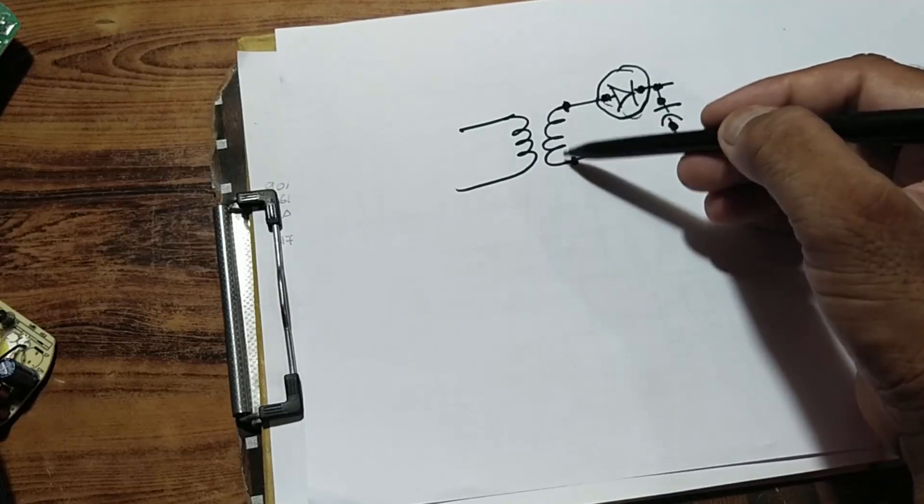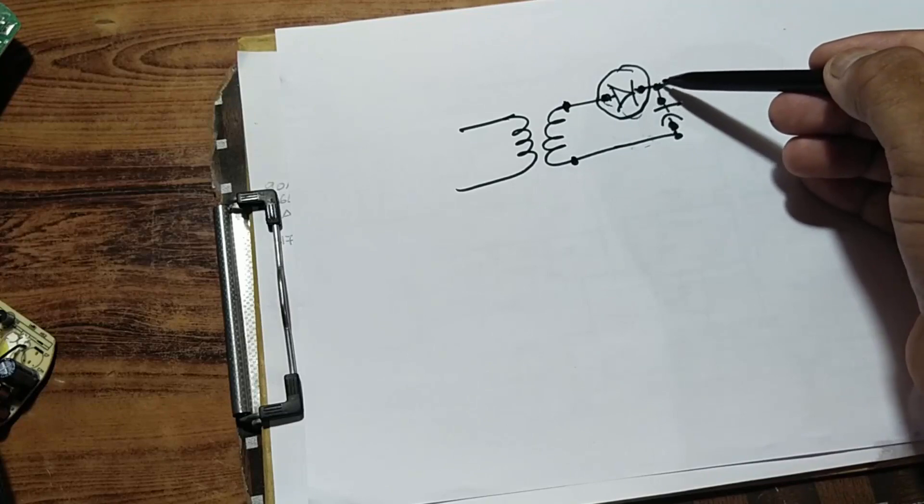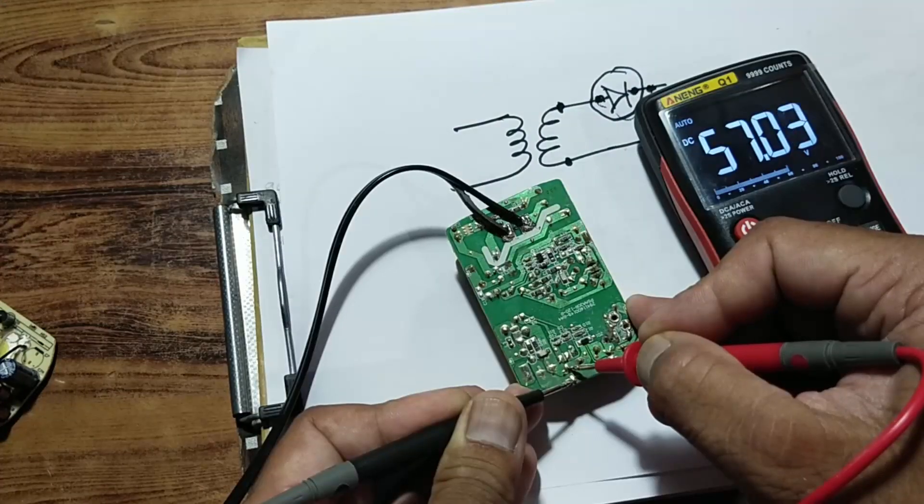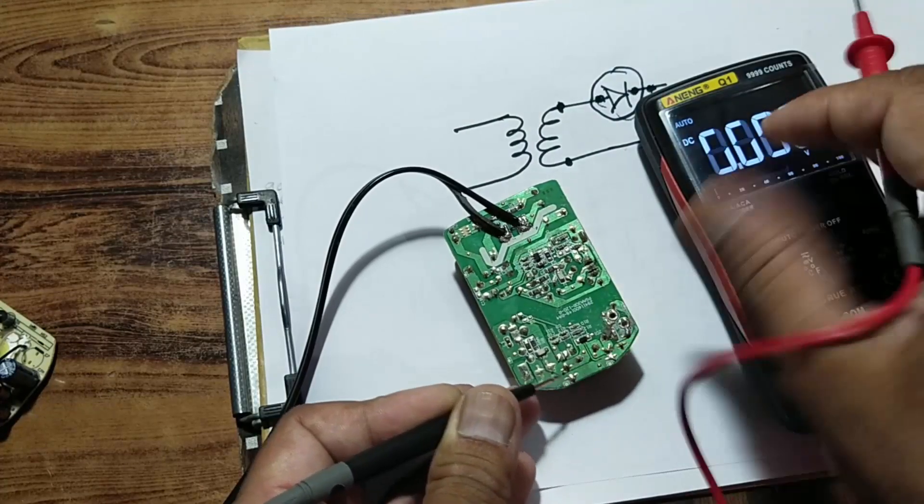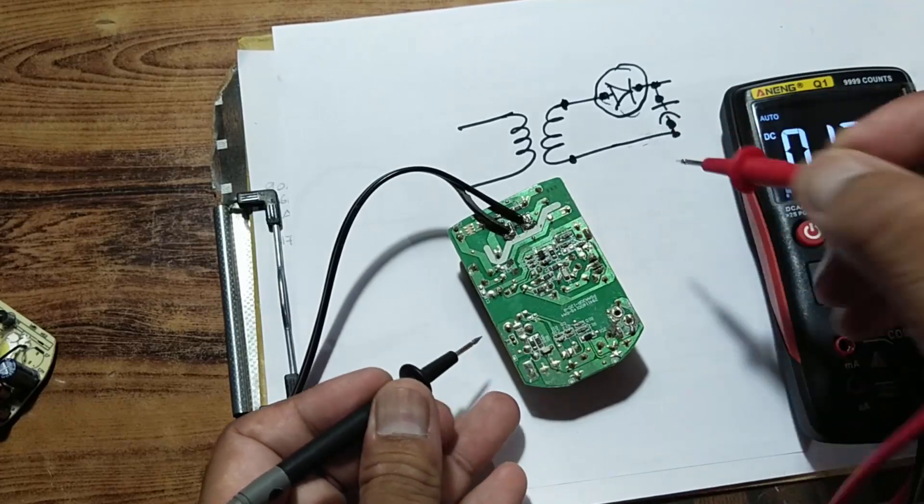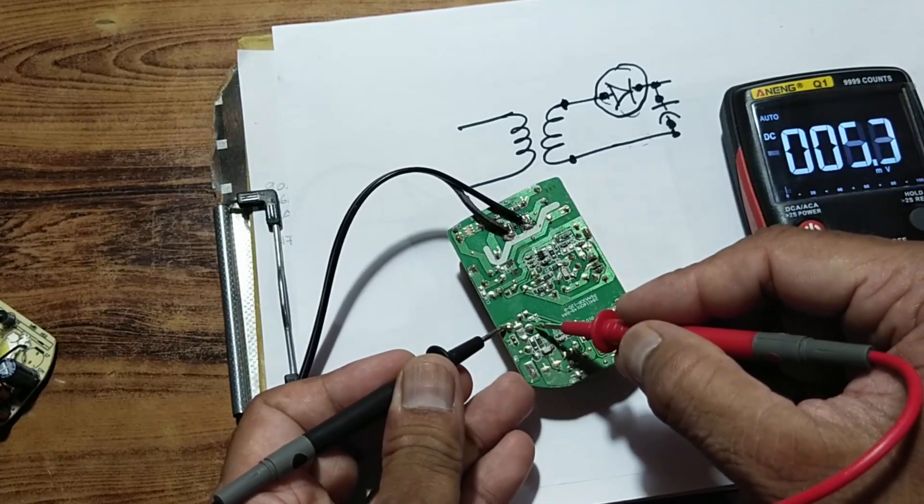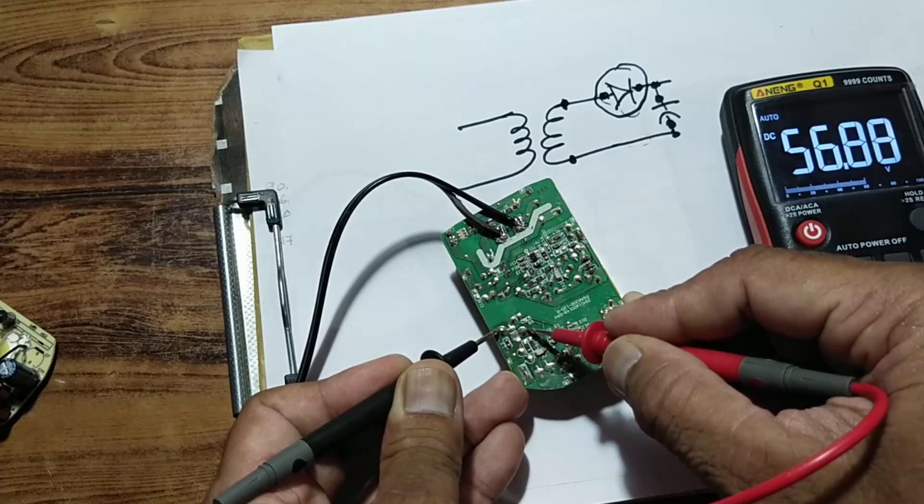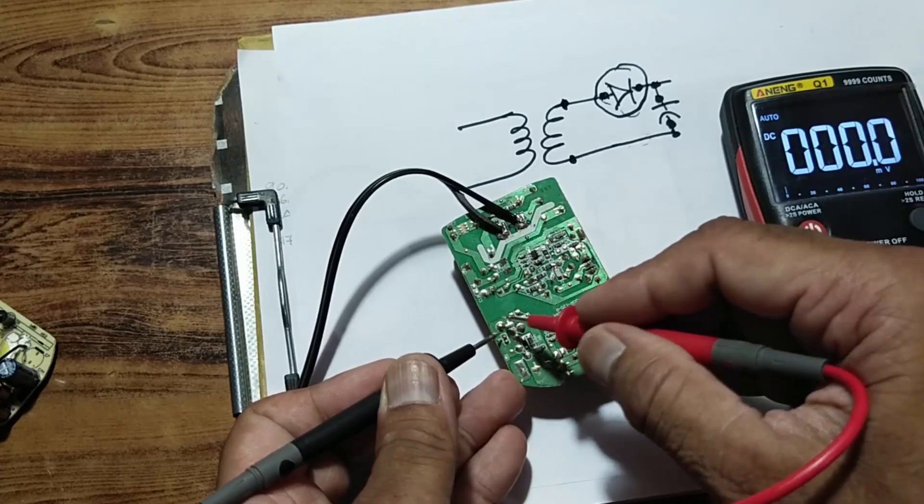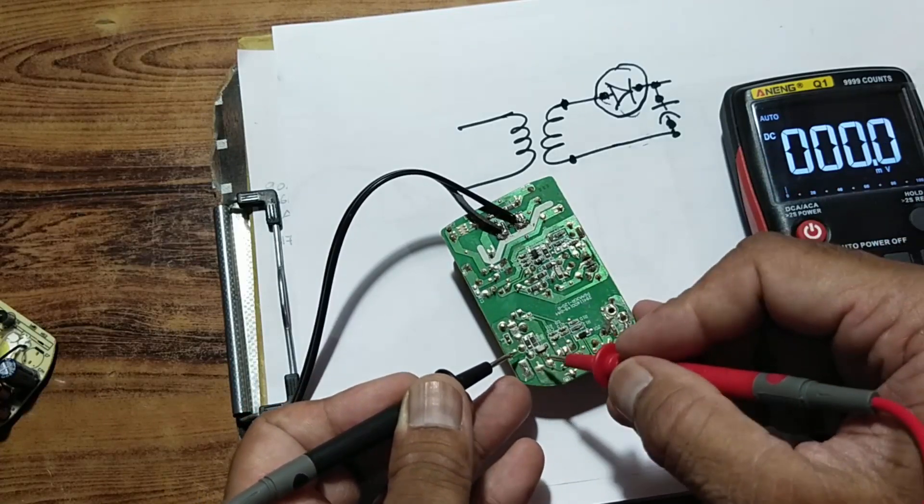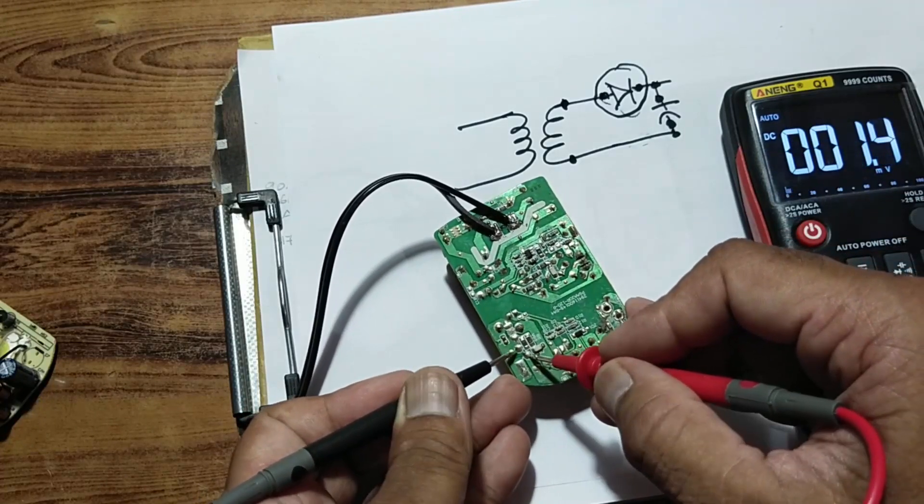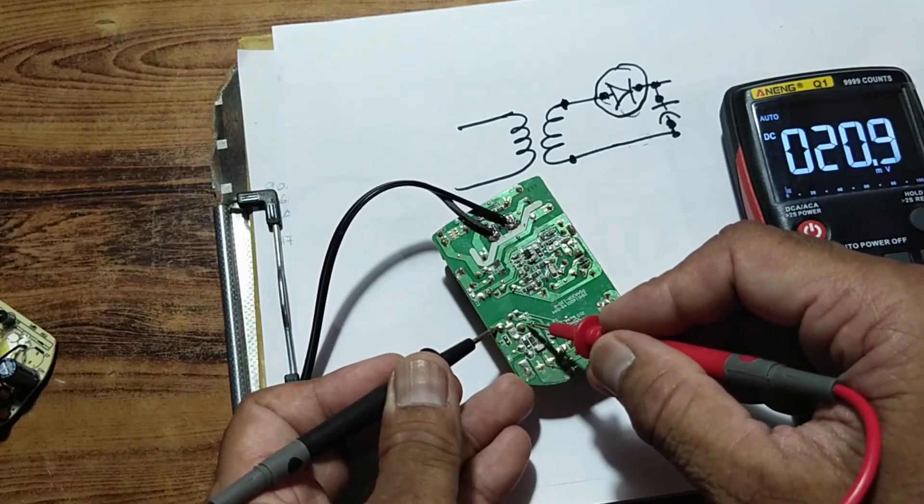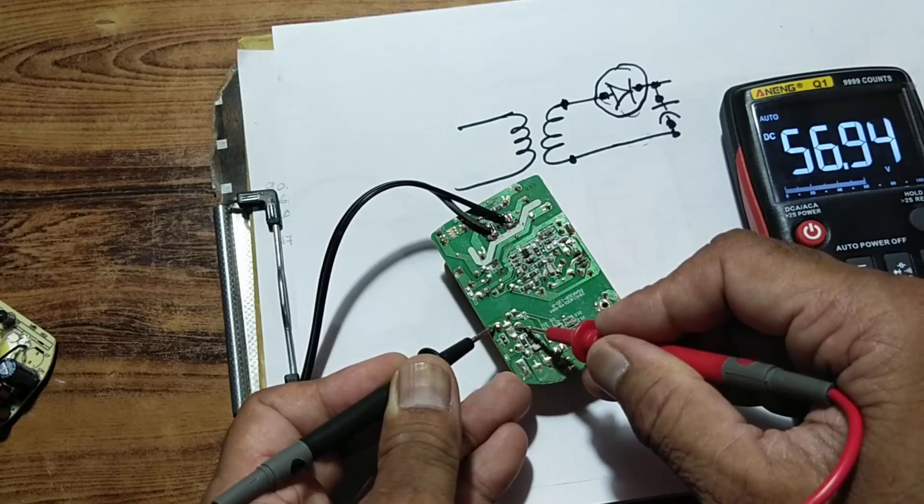So 57 volt output at the capacitor, or we can check the same voltage at this diode. 56.88 and the remaining voltage in this winding is 0.14 volt from here and the other voltage here.